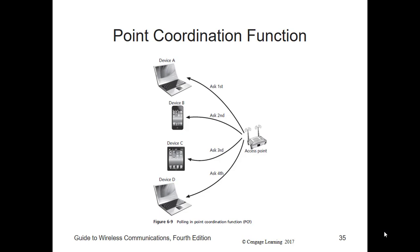If the AP hears no traffic on the wireless medium, it will send out a beacon frame to all devices. One field of the frame contains a value indicating the number of time slots used for polling, as well as the number of time slots used for contention. Devices not yet associated with the AP that receive the beacon will take advantage of the contention period to contact the AP and join the wireless LAN.